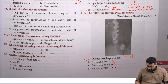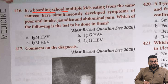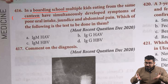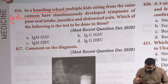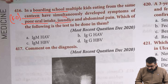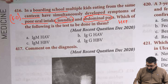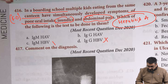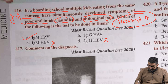Next question: in a boarding school, multiple kids eating from the same canteen simultaneously develop poor oral intake, jaundice, and abdominal pain. Eating from the same canteen indicates feco-oral route spread. This is a case of hepatitis, and the most common hepatitis in India is hepatitis A. Since it is an acute infection, we check IgM levels. The answer is hepatitis A IgM — acute infection.